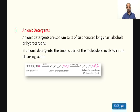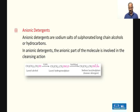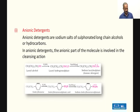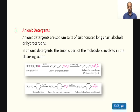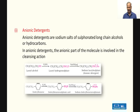Another example of anionic detergents: if an aromatic hydrocarbon undergoes sulfonation, a benzene sulfonic acid-type derivative forms. Its sodium salt is sodium dodecylbenzene sulfonate — another important anionic detergent.